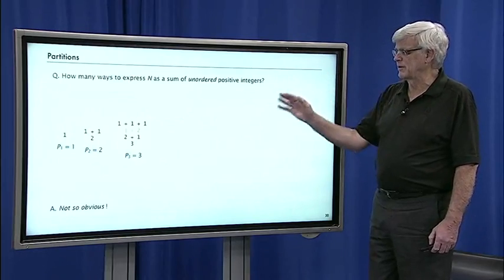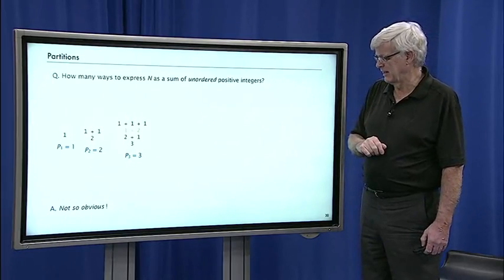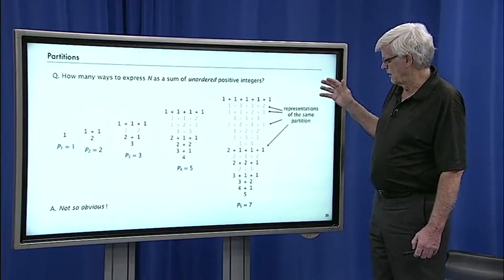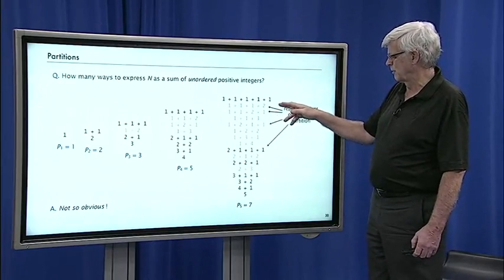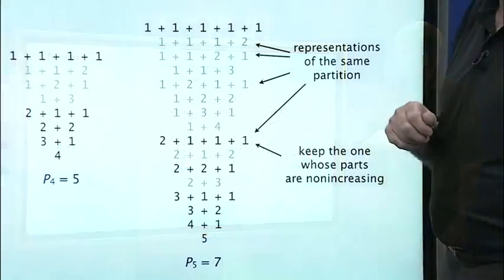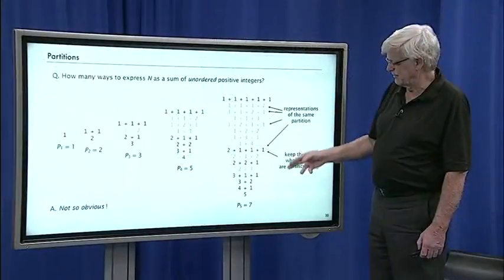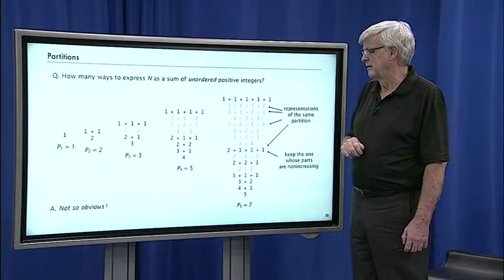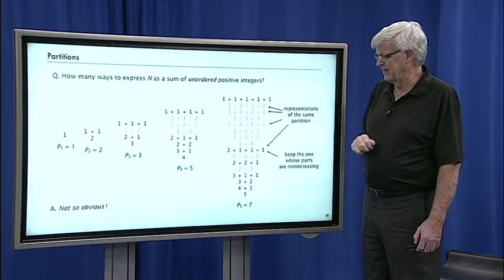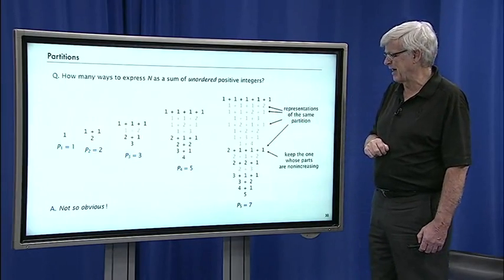Now, what about partitions? What if we don't care about the order? Same way as we did for trees. So there's three partitions of n integers. So we'll take the one that goes in decreasing order. So all of these, 1 plus 1 plus 1 plus 2, 1 plus 2 plus 1, and so forth, they all represent the same partition. We'll keep the one whose parts are not increasing. So anyway, just crossing out the ones that appear more than once, there's seven partitions of five elements expressed as the sum of unordered positive integers. It's not so obvious what the answer to this one is. I think you'll look at it, you're not going to find the 2 to the n minus 1 pattern here.